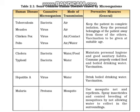The main precaution for hepatitis A is to drink clean, safe, boiled water. The last disease in the table is malaria, caused by the microorganism protozoa. The mode of transmission is mosquito — specifically the bite of the female Anopheles mosquito. Preventive measures include using mosquito nets and repellents, spraying insecticides, and controlling mosquito breeding by not allowing water to collect in our surroundings.